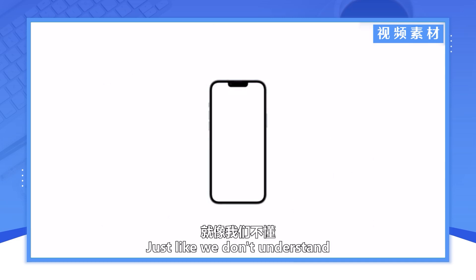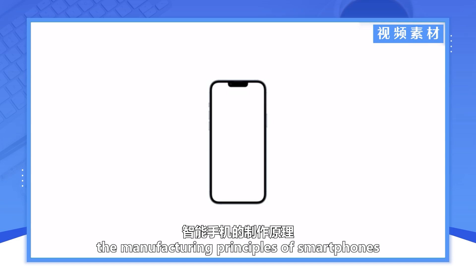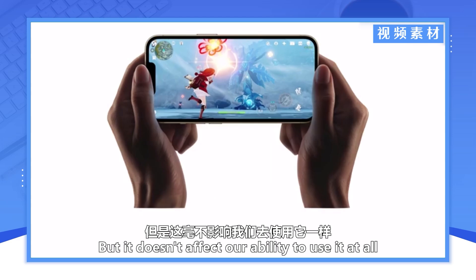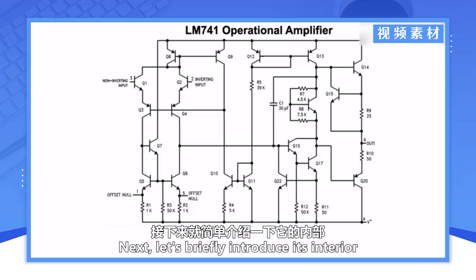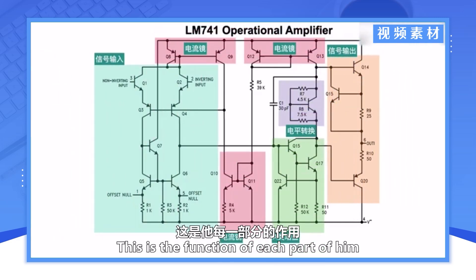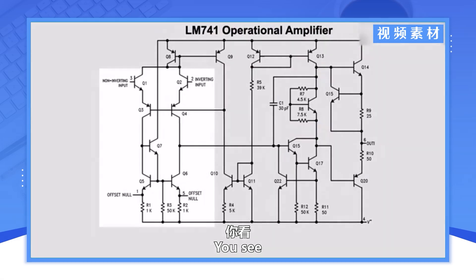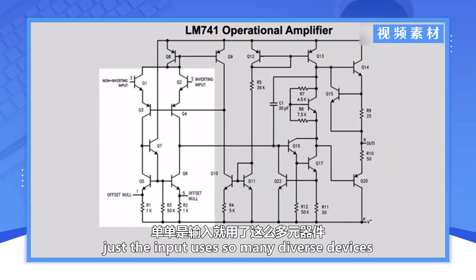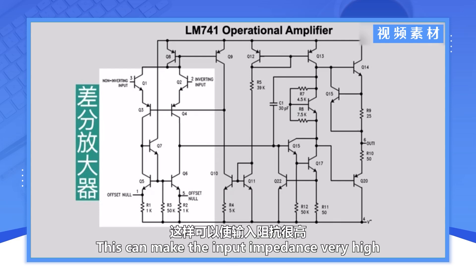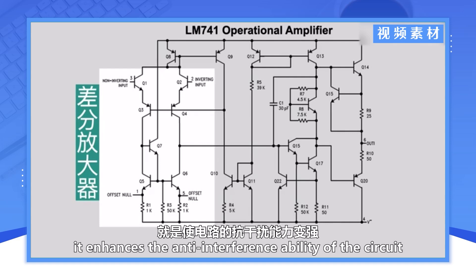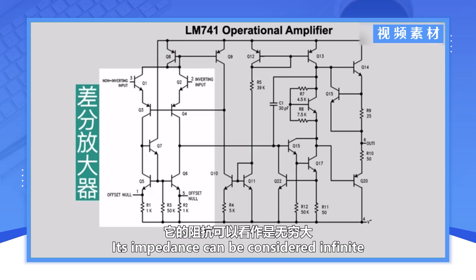Just like we don't understand the manufacturing principles of smartphones, but it doesn't affect our ability to use it at all. The amplifier is the same. Let's briefly introduce its interior. You see, just the input uses so many diverse devices. These components together form a differential amplifier. This can make the input impedance very high and enhances the anti-interference ability of the circuit. Its impedance can be considered infinite.